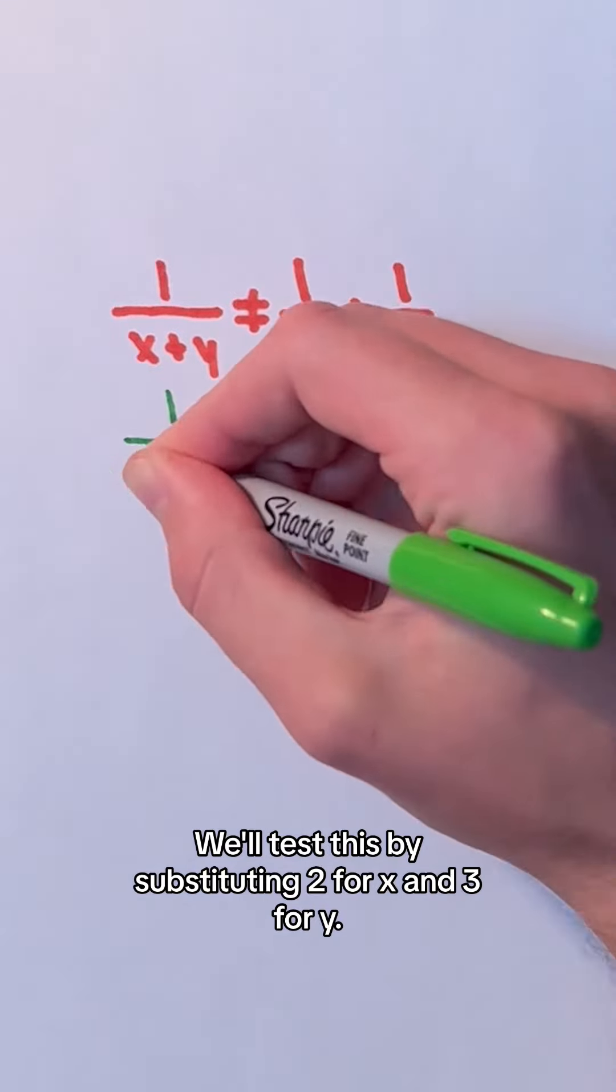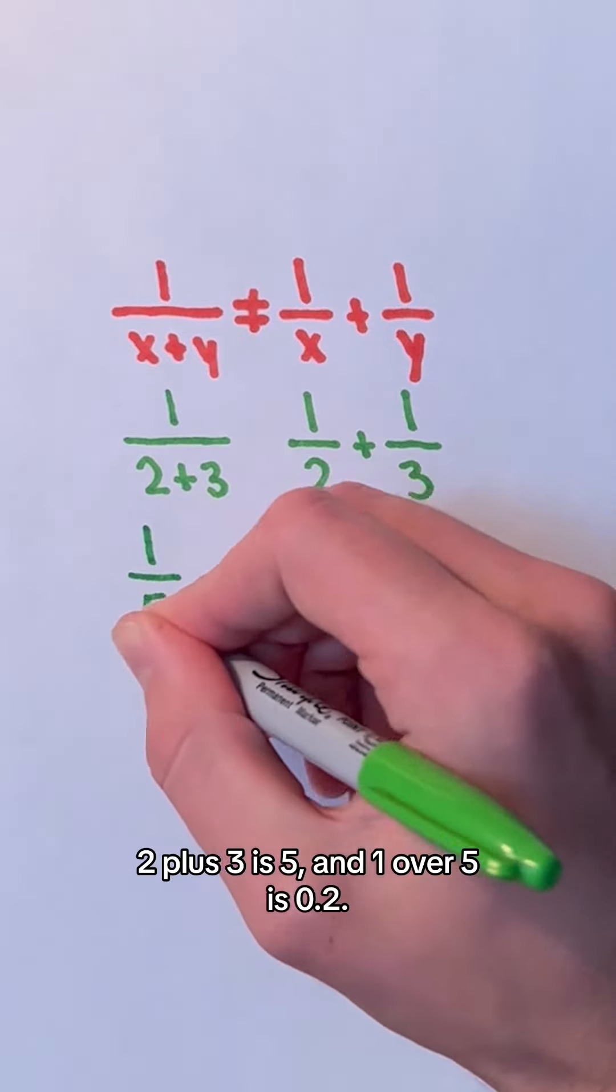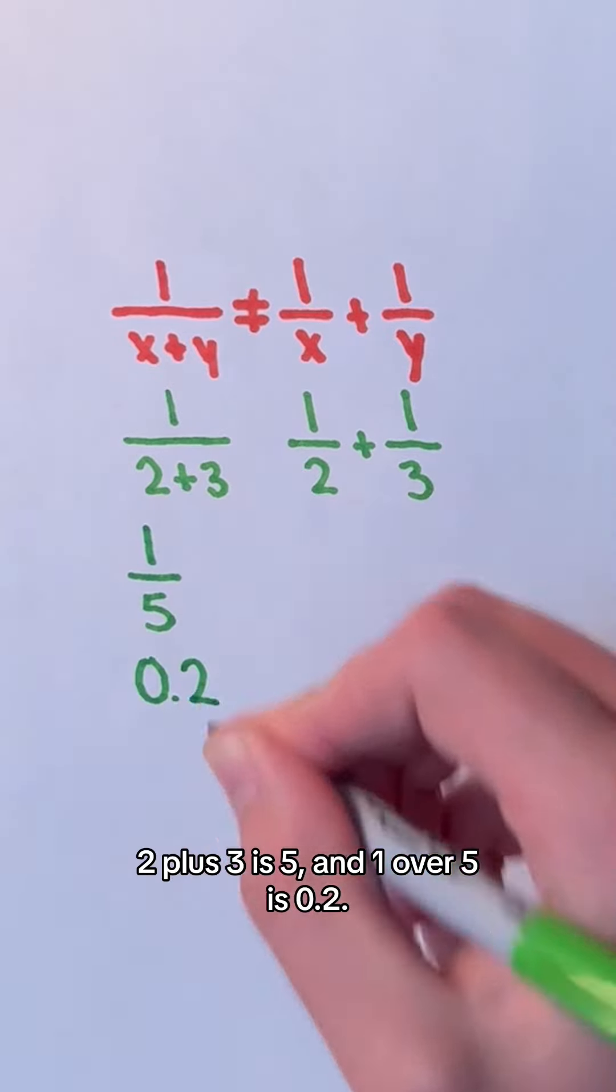We'll test this by substituting 2 for x and 3 for y. In the first expression, 2 plus 3 is 5 and 1 over 5 is 0.2.